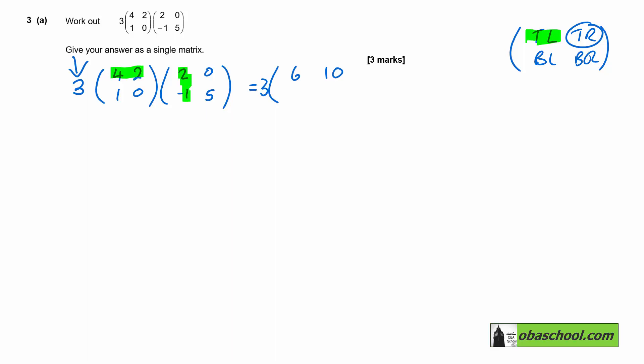To get bottom left, we do the bottom times the left. So one times two, zero times negative one, that is two.